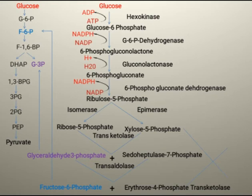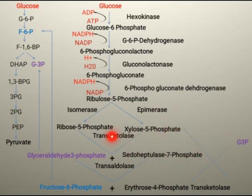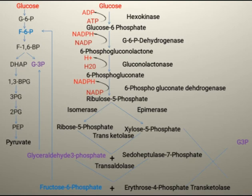In a second transketolase reaction, xylose 5-phosphate donates 2 carbons to erythrose 4-phosphate. Xylose 5-phosphate loses 2 carbons and changes into the 3-carbon containing sugar glyceraldehyde 3-phosphate. Similarly, erythrose 4-phosphate gains 2 carbons and becomes the 6-carbon containing sugar fructose 6-phosphate.